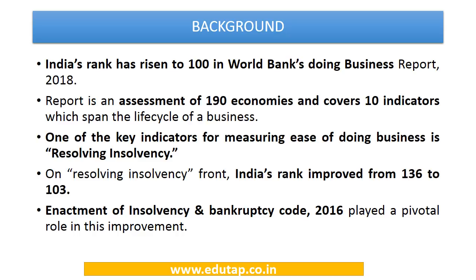India's rank has improved in the World Bank's Doing Business Report 2018, which assesses over 190 economies across 10 indicators covering the entire life cycle of a business. Resolving insolvency is a key indicator, and India's rank improved to 103 on this front. The enactment of the Insolvency and Bankruptcy Code played a key role in this improvement, and further changes being made under the code are expected to boost our ease of doing business rankings globally.